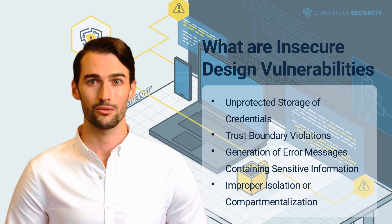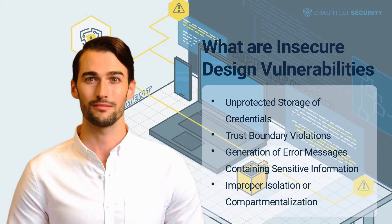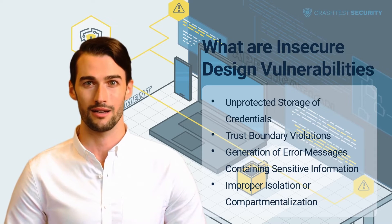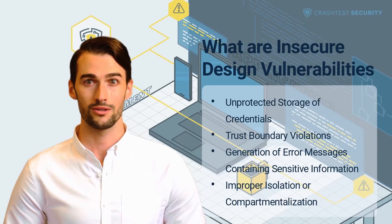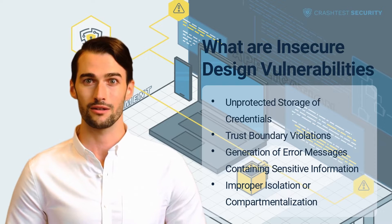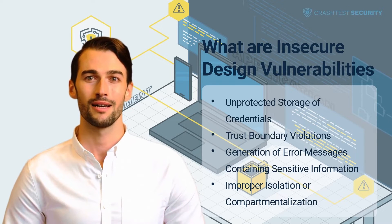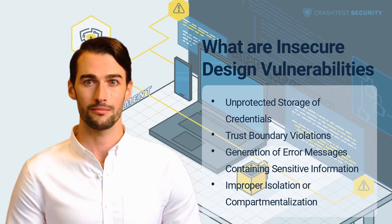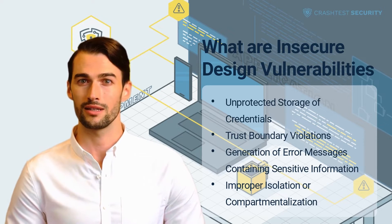Insecure design vulnerabilities arise when developers, QA, and/or security teams fail to anticipate and evaluate threats during the code design phase. These vulnerabilities are also a consequence of non-adherence to security best practices while designing an application. As the threat landscape evolves, mitigating design vulnerabilities requires consistent threat modeling to prevent known attack methods.